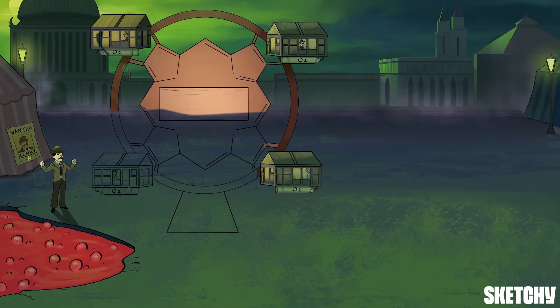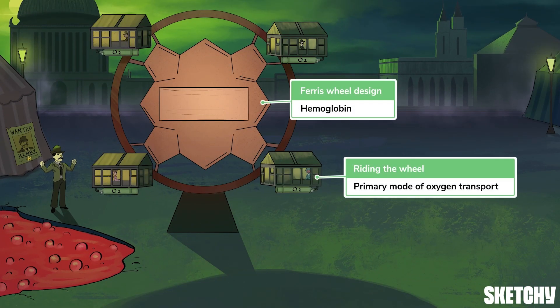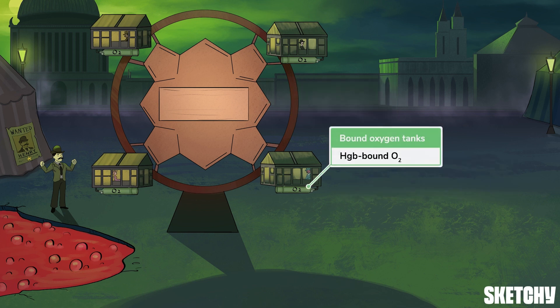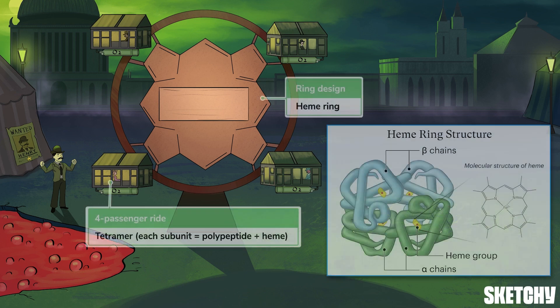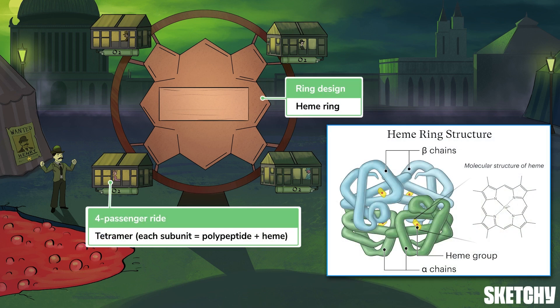Most of the oxygen in the blood — about 98% — actually hitches a ride on a special transport protein known as hemoglobin. This is known as bound oxygen. Let our curiously hemoglobin-shaped wheel remind you that binding of oxygen to hemoglobin sets the wheels in motion to transport lots of oxygen in the blood. Each hemoglobin molecule can carry up to four molecules of oxygen, represented by the four oxygen tanks attached to each car of this ride. There are exactly four cars on this ferris wheel because hemoglobin is a molecule composed of four subunits — a tetramer.